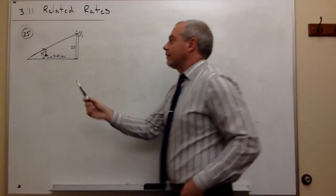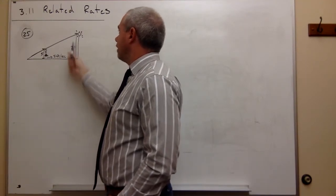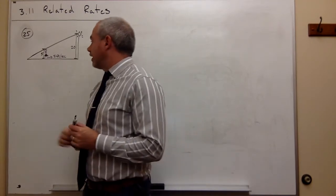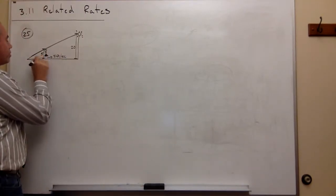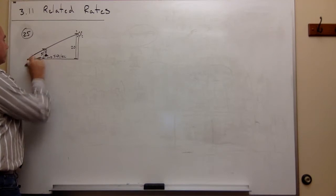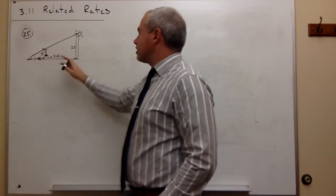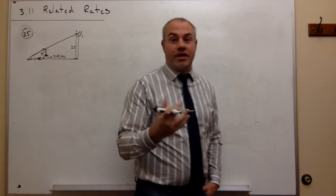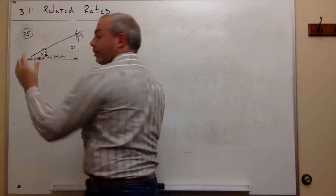In problem number 25, we have a 5-foot woman walking towards a 20-foot tall street lamp at a rate of 8 feet per second. Since she's walking towards the street lamp, she's casting a shadow backwards. The question is: as she walks towards the street lamp, at what rate is the length of her shadow decreasing? As she gets closer and closer to the street lamp, her shadow gets shorter and shorter.